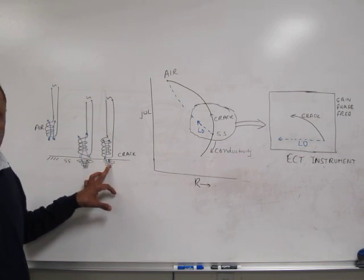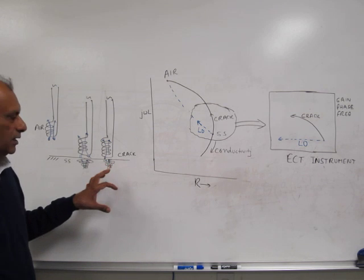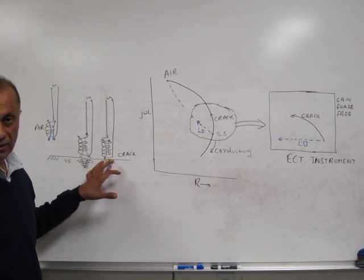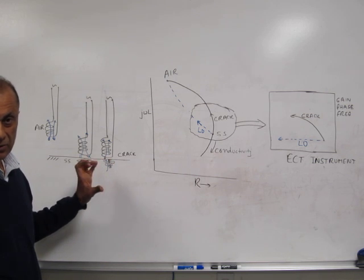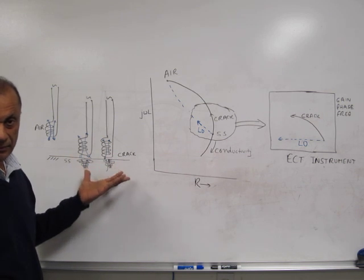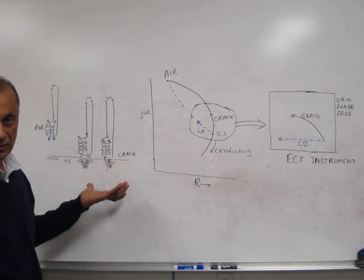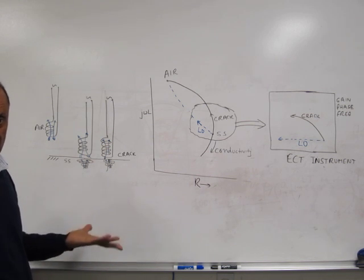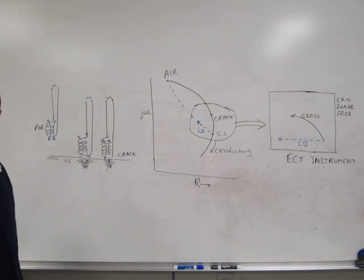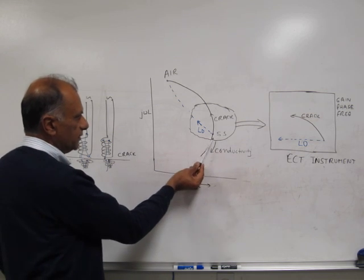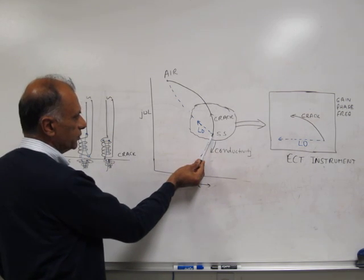As we scan the surface of the stainless steel and encounter a crack, the crack distorts the eddy currents in the material, thereby distorting the magnetic field. This change in the magnetic field interacts with the primary magnetic field of the eddy current coil, changing the impedance of the coil once again.